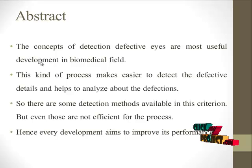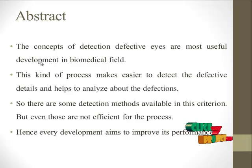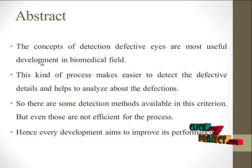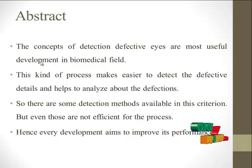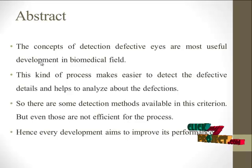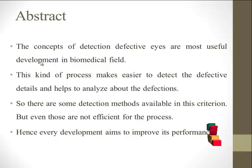Diabetic retinopathy, the most common type of eye disease, occurs when blood vessels in the retina change. It is found to be the leading cause of visual impairment. Sometimes these vessels swell and leak fluid or even close off completely. In other cases, abnormal new blood vessels grow on the surface of the retina. The presence of microorganisms in the eye is one of the early signs of diabetic retinopathy.